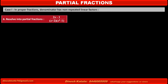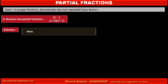Problem 6: Resolve into partial fractions 2x minus 1 upon (x plus 2) into (x squared minus 1). In the fraction, the denominator has factors x plus 2 and x squared minus 1. The second factor x squared minus 1 can be factorized as (x minus 1)(x plus 1), so the fraction becomes 2x minus 1 upon (x plus 2)(x minus 1)(x plus 1).